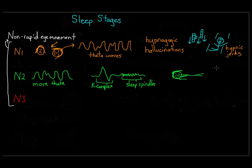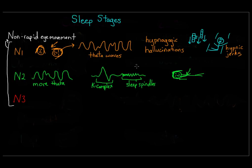K-complexes are a different type of brain activity also thought to suppress cortical arousal and keep you asleep. They're also thought to help with sleep-based memory consolidation — the theory that some memories are transferred into your long-term memory during sleep. Interestingly, even though K-complexes occur naturally, you can also induce them by gently touching someone in this stage of sleep. Your brain assesses that the touch is non-threatening and suppresses processing of that stimuli to keep you asleep.